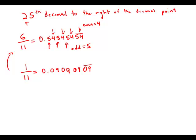Well, 25, that's an odd number. And so any odd digit of 6 over 11 is going to be 5, and this is answer choice C.